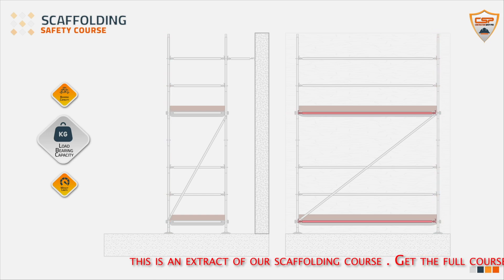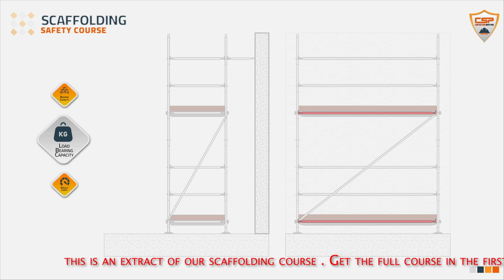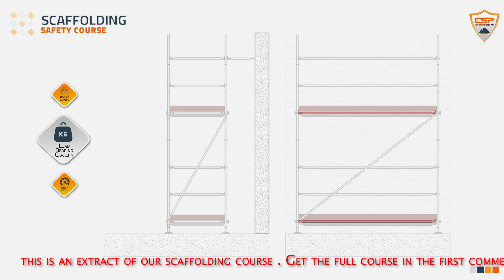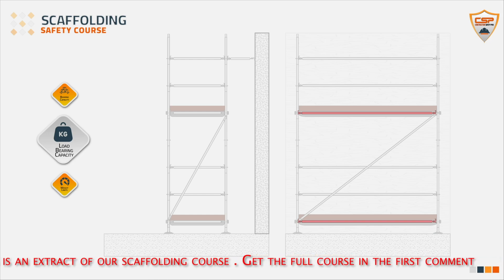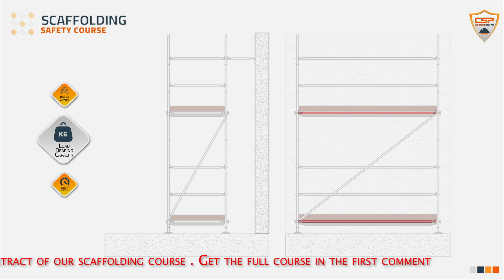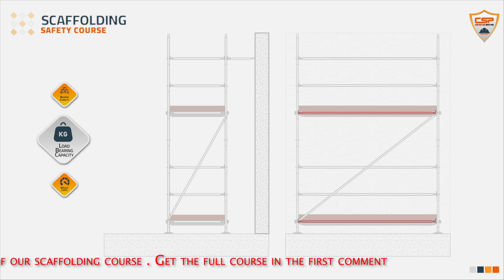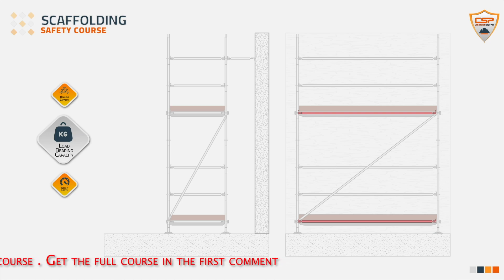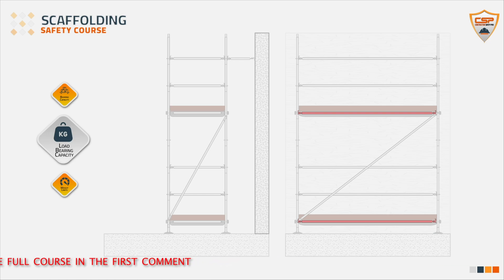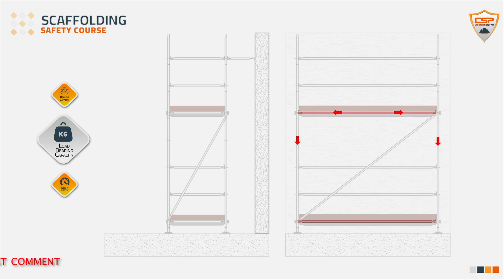Ledgers — horizontal tubes. Ledgers are horizontal tubes that run parallel to the building facade, typically with an outer diameter of 48.3 mm and a wall thickness of 3.2 mm. They connect the standards and provide lateral support to the scaffold structure. Ledgers play a vital role in maintaining the horizontal stability of the scaffold, helping to distribute loads across the scaffold by connecting the vertical standards and ensuring that the structure remains rigid and secure.